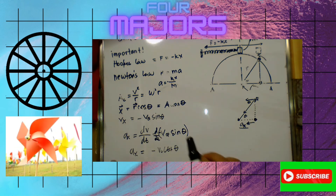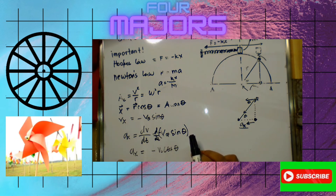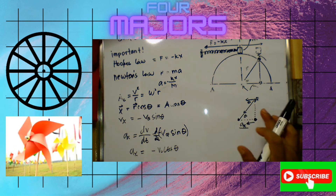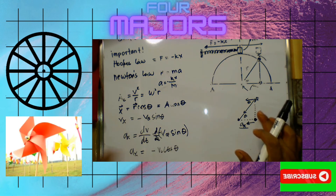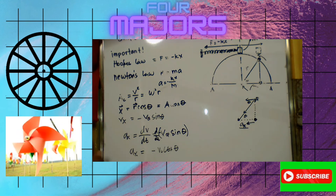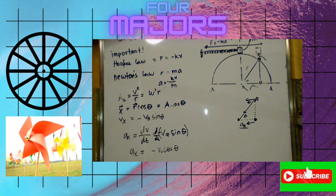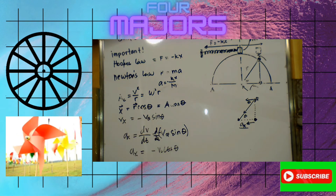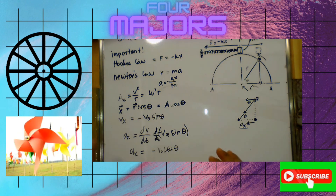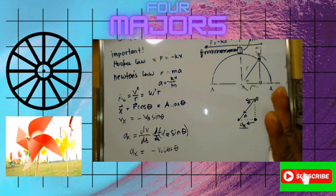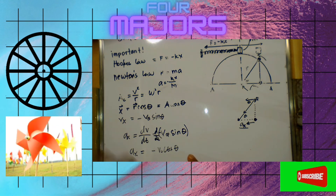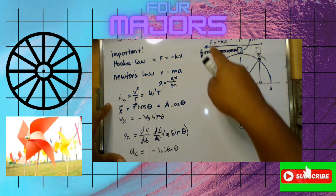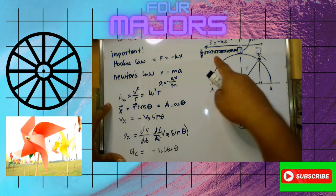If you are not satisfied with the calculus derivation, you can use the complementary angle method with the diagram to show the same result. The derivation is partly done — what remains is to connect the acceleration, velocity, and displacement to the properties of the spring, which is the object driving the motion.